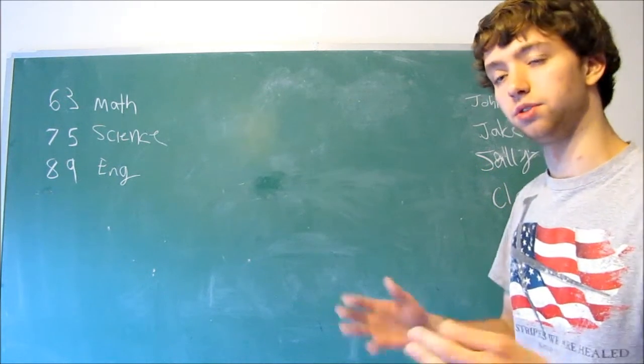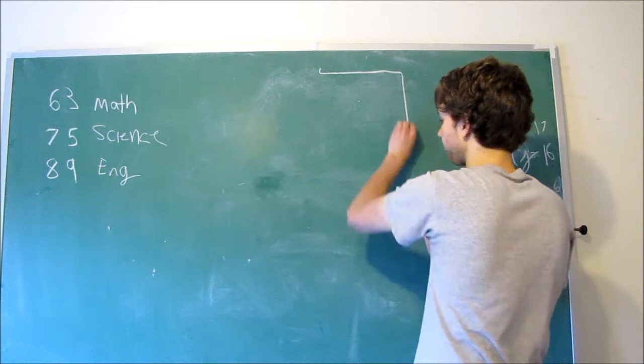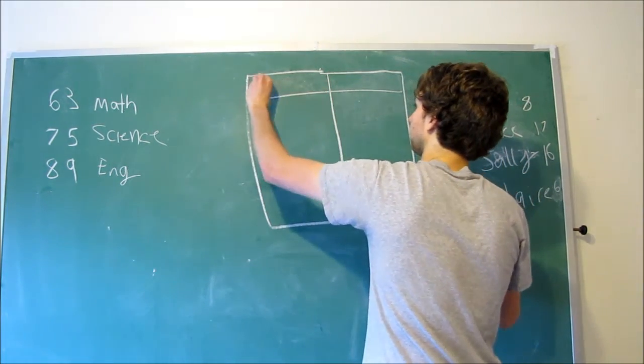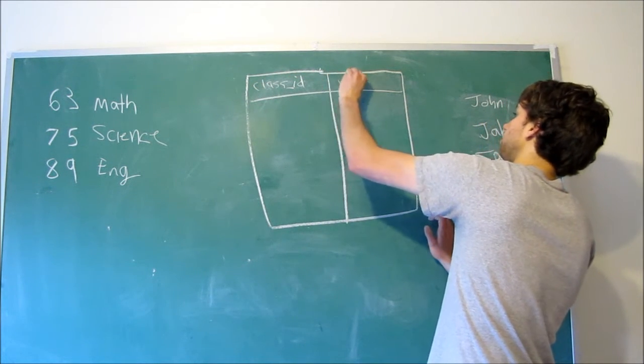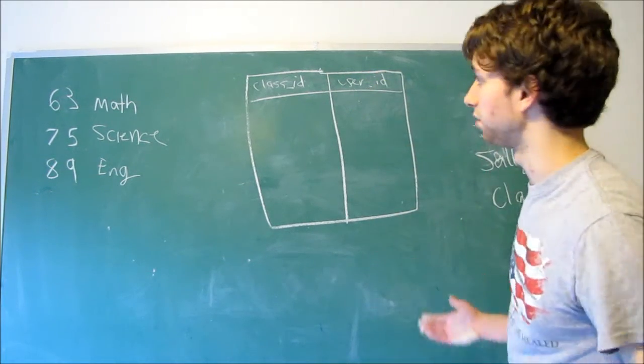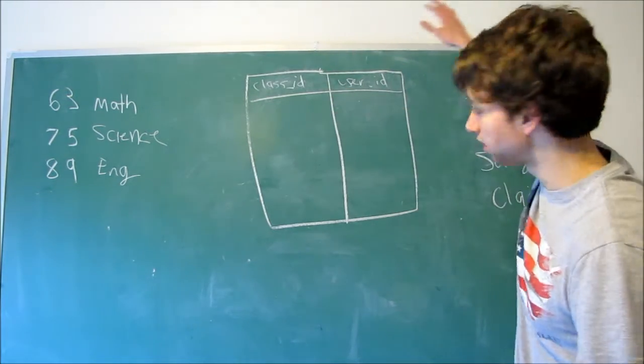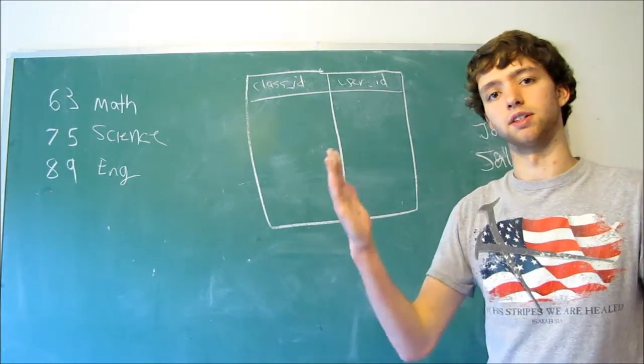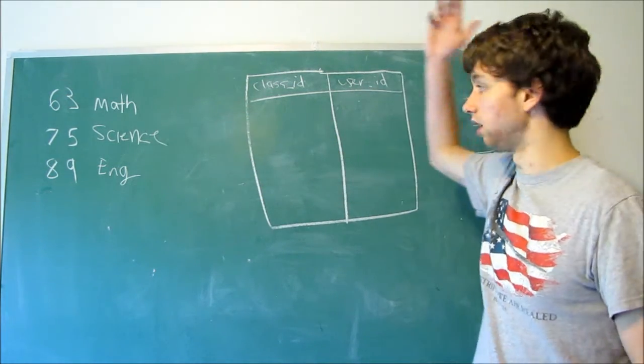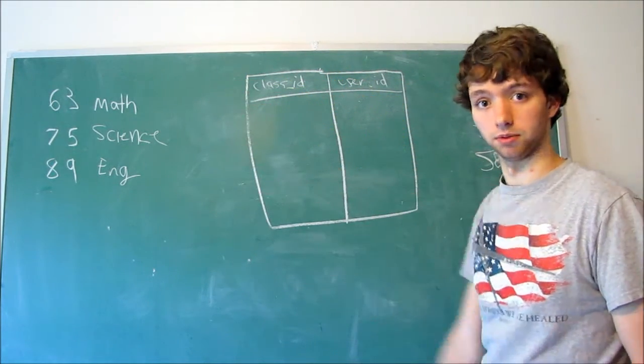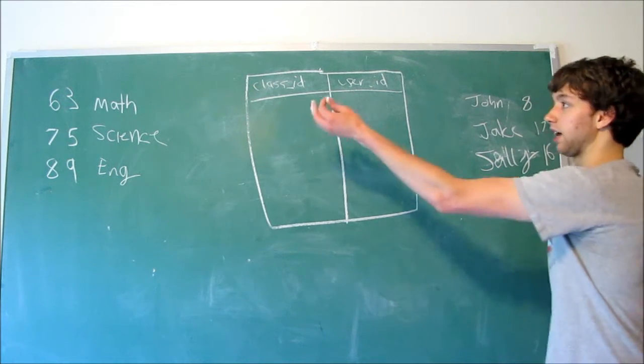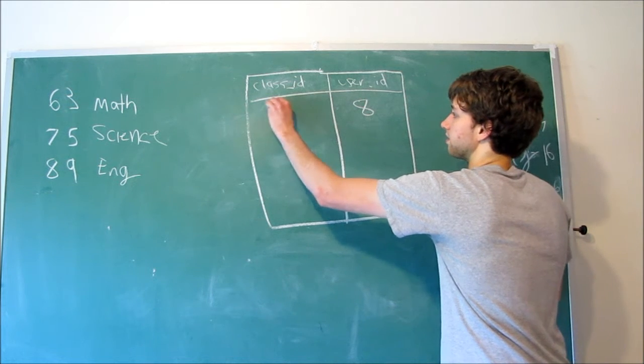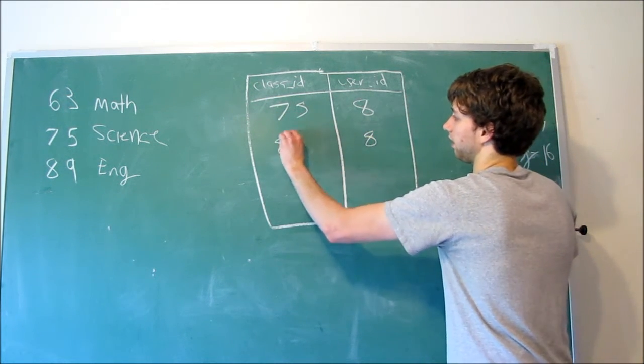Now, we use the intermediary table to connect these IDs. We have this table here. We have two columns. We have the class ID. And then we have the user ID. And then if you wanted to title these tables, we can make it classes, class students, and students. It's an intermediary table. What an intermediary is, it's something that connects two things. It allows this table to talk to that table. So it's a connection between these two tables. We put the ID of the user with the class that they're taking. Let's say John is taking English and Science. We would have 8, 75, 8, 89.